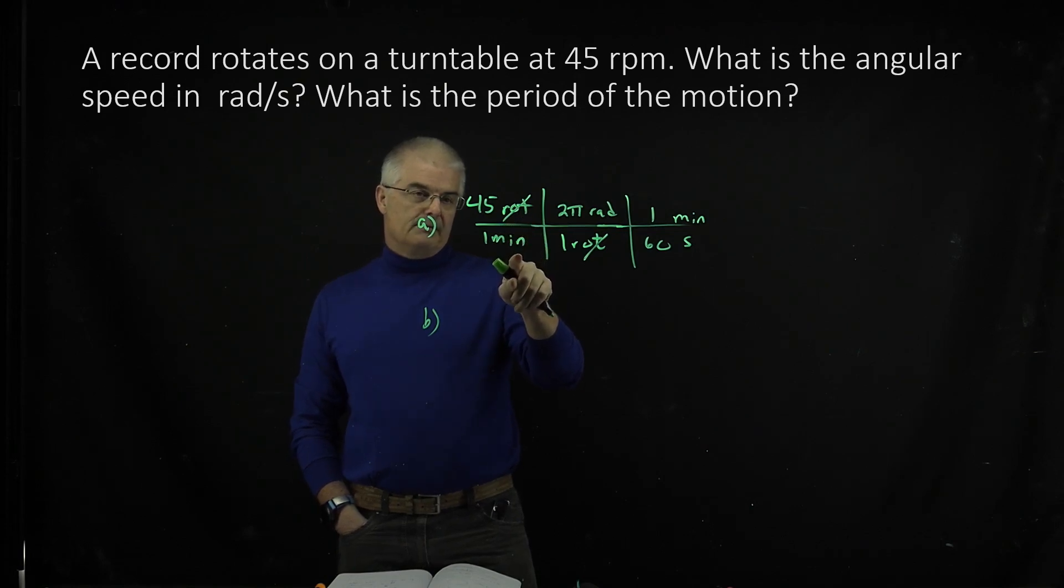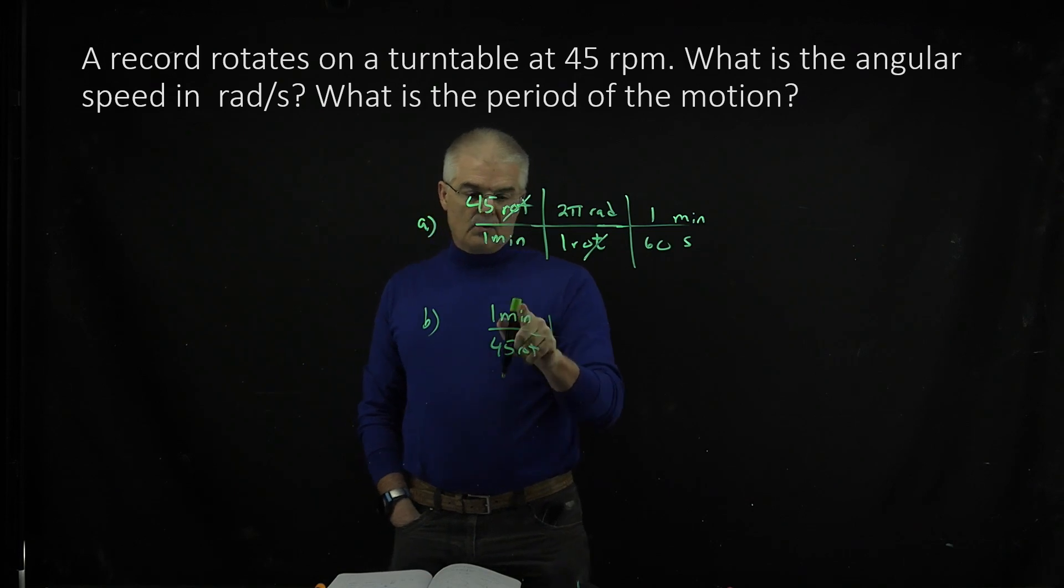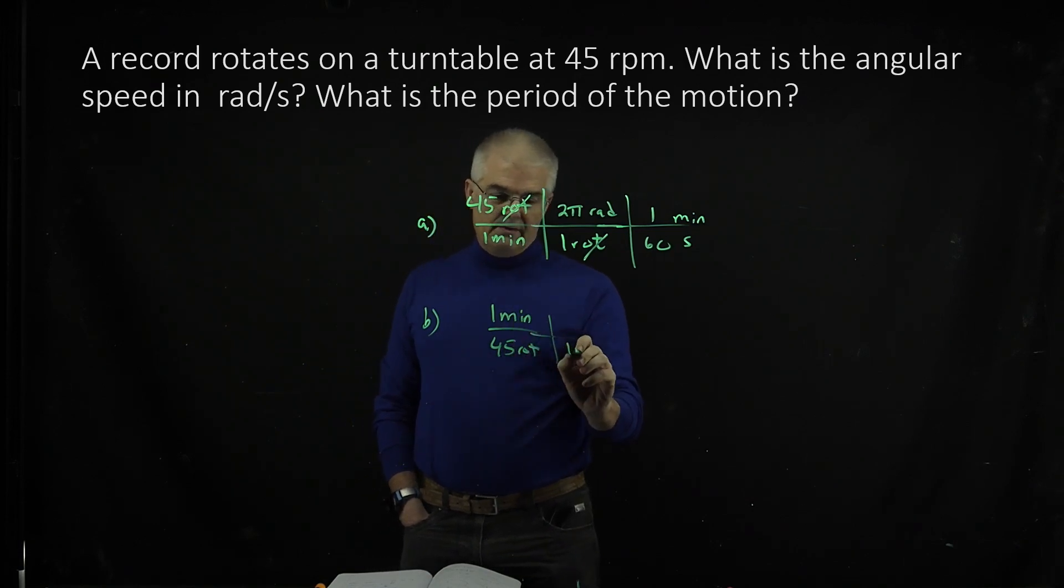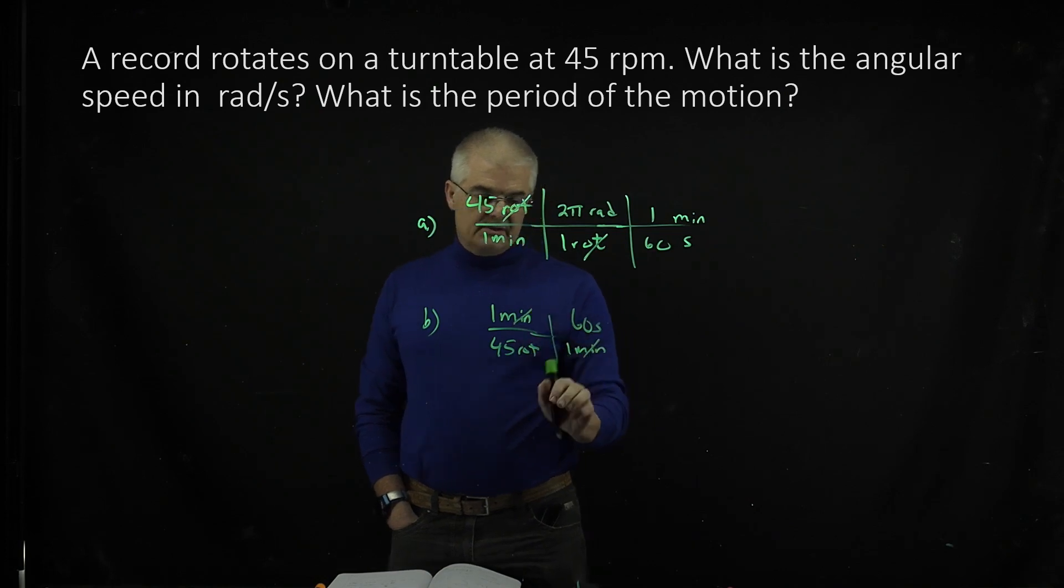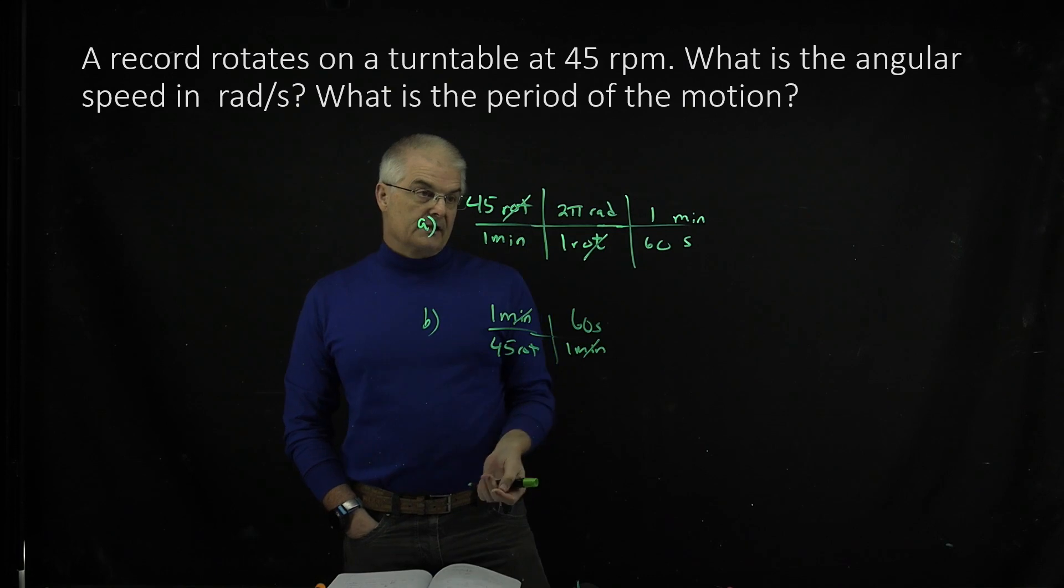What you're really asking is minutes per rotation. So I can say one minute over 45 rotations. And per one rotation, if I say one minute is 60 seconds. Again, I'm just using dimensional analysis. I'll get seconds per rotation, which is the answer to part B.